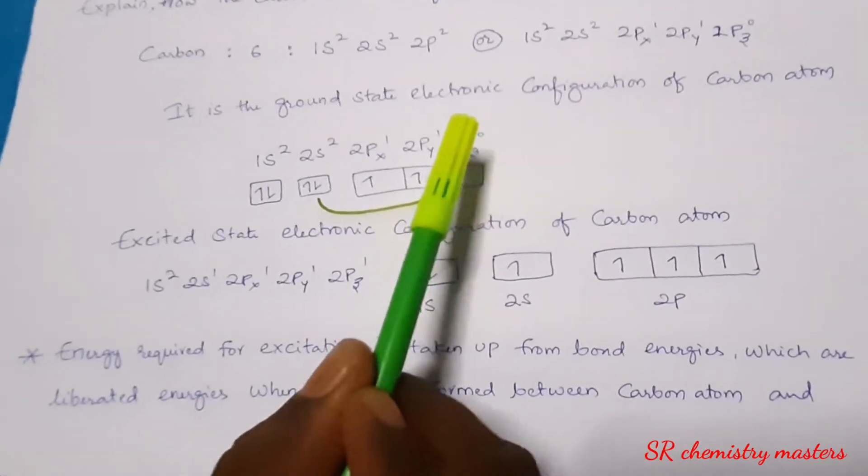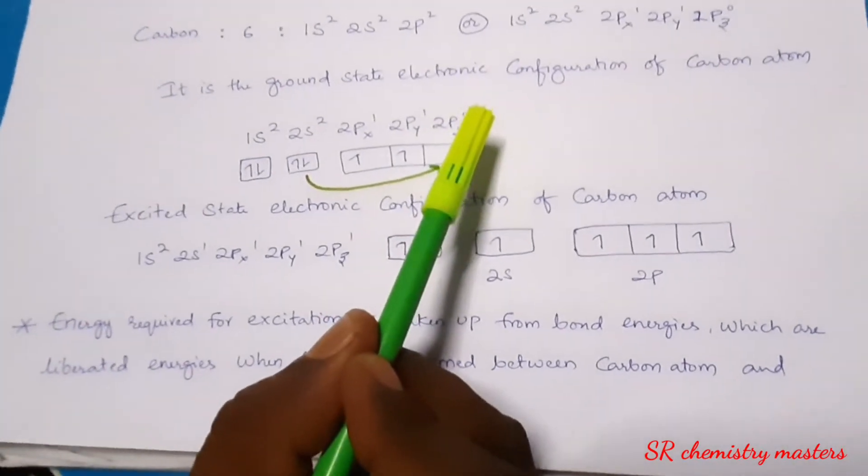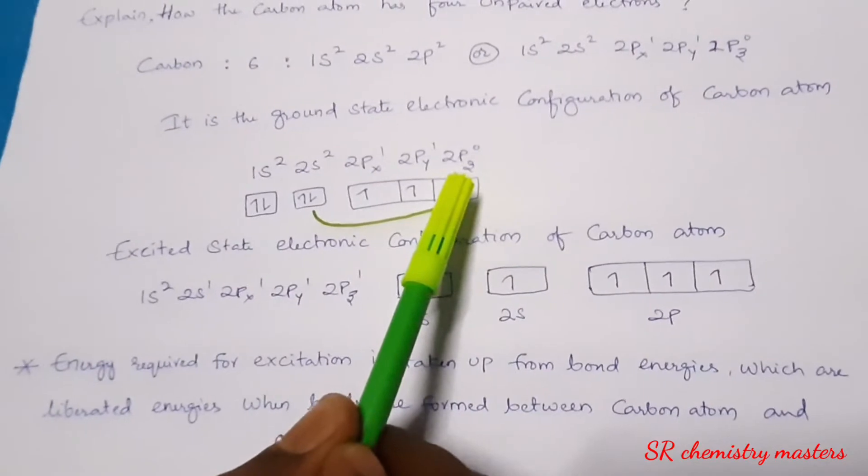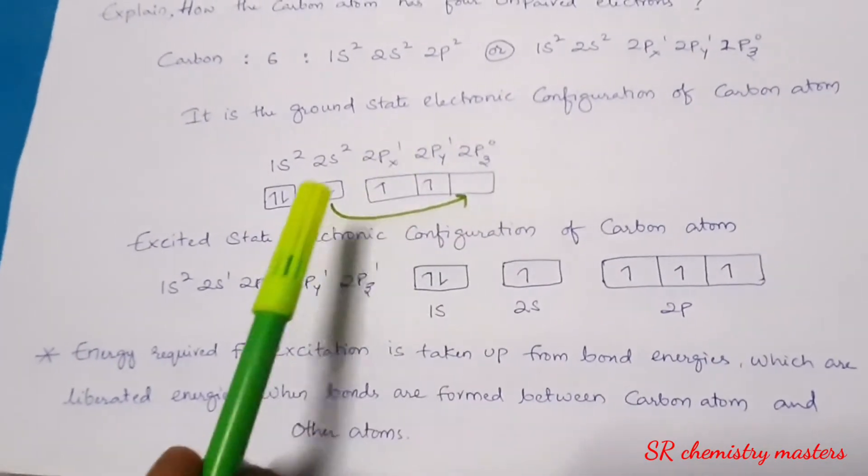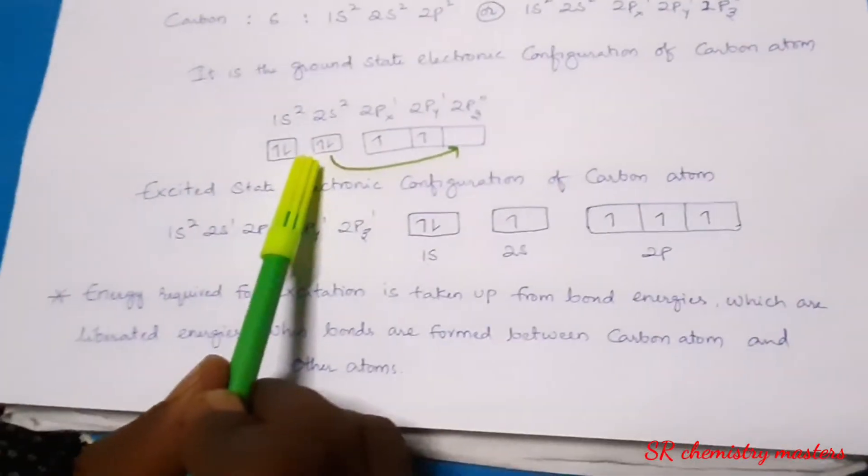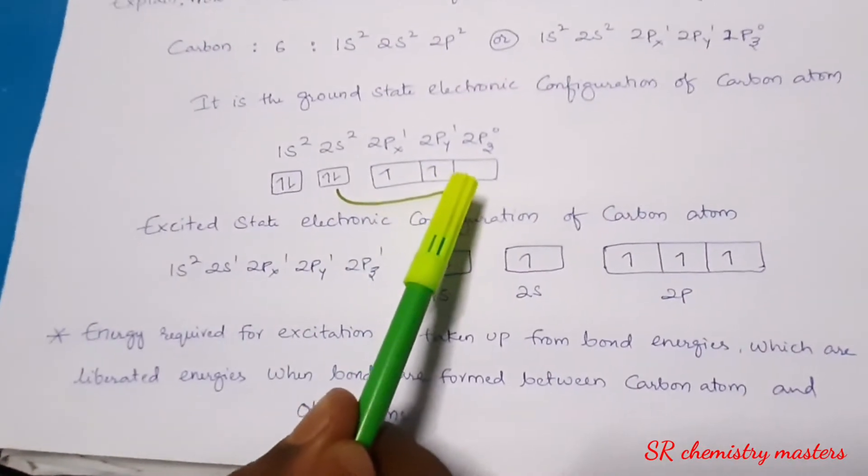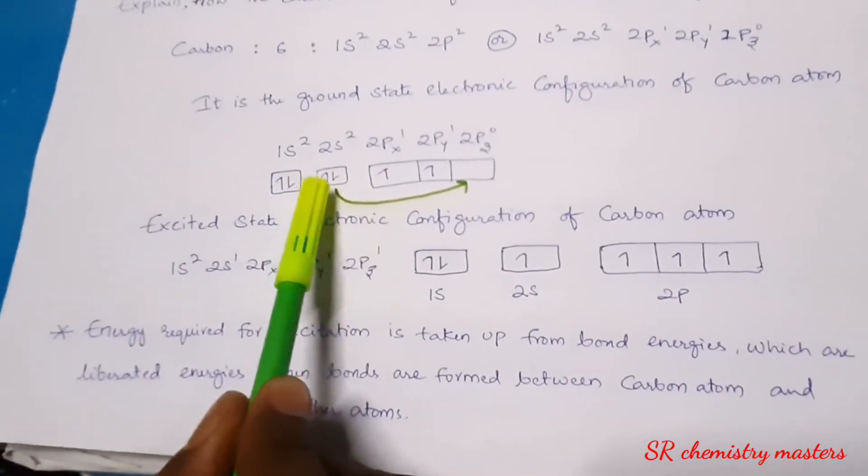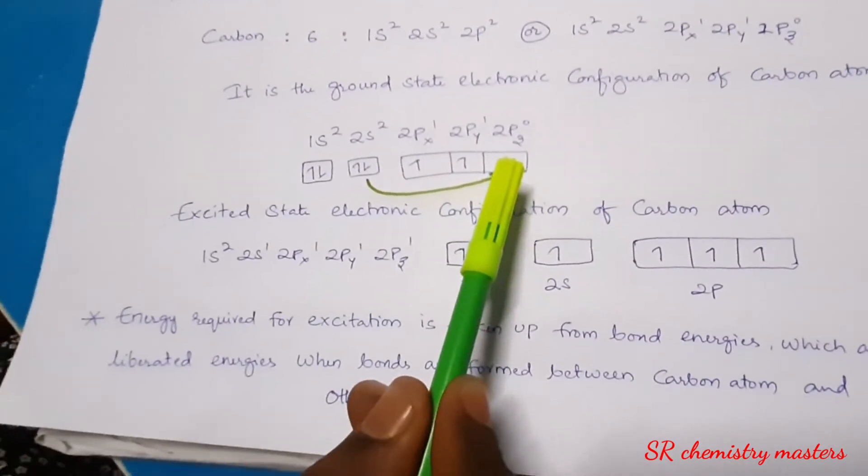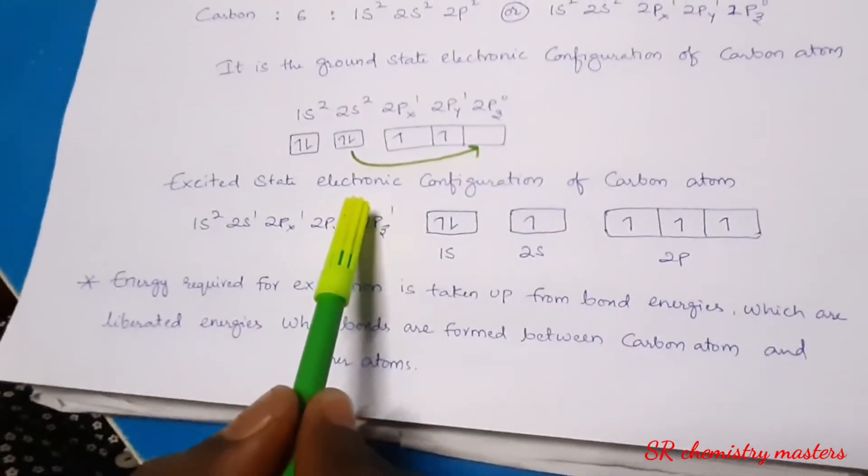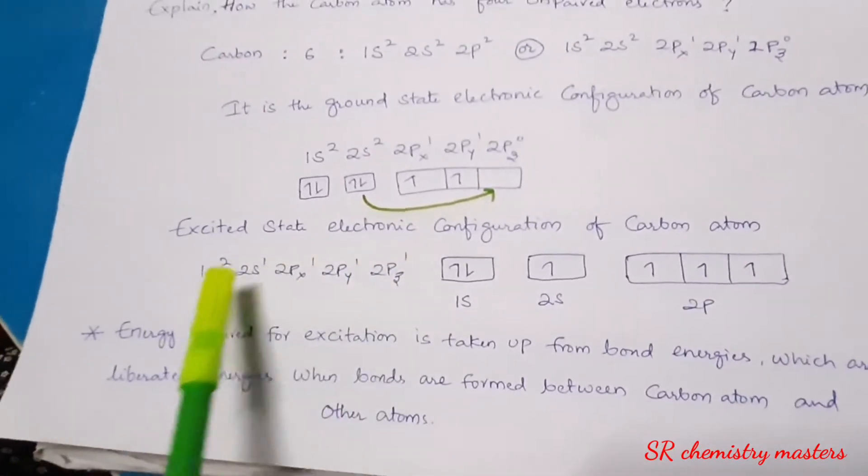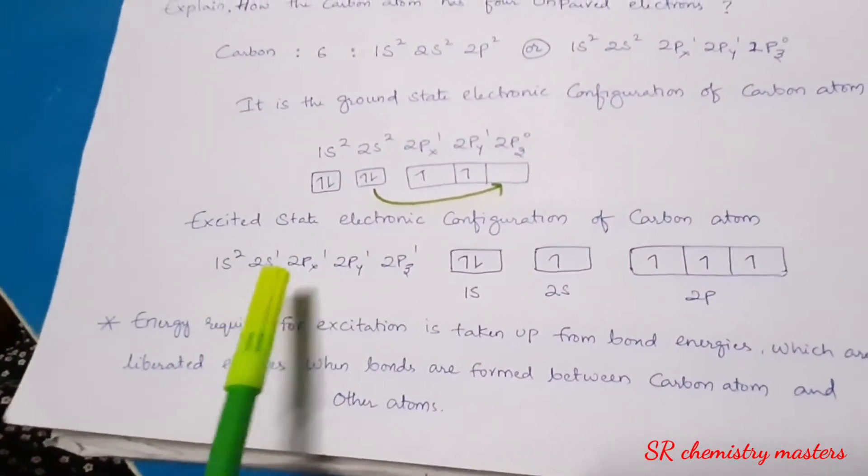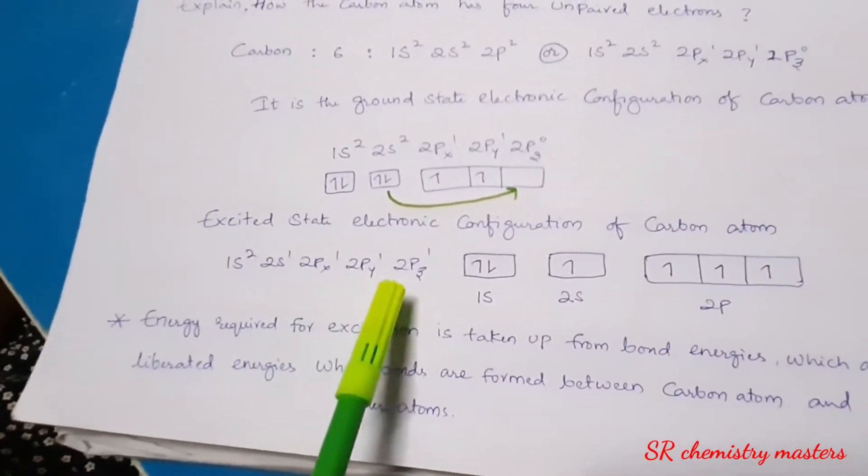Now, whenever the carbon atom gets energy, the electron from the 2s orbital gets excited and accommodated in 2pz orbital. When the electron gets shifted from 2s to 2p, the excited state electronic configuration of carbon atom will be 1s2, 2s1, 2px1, 2py1, 2pz1.